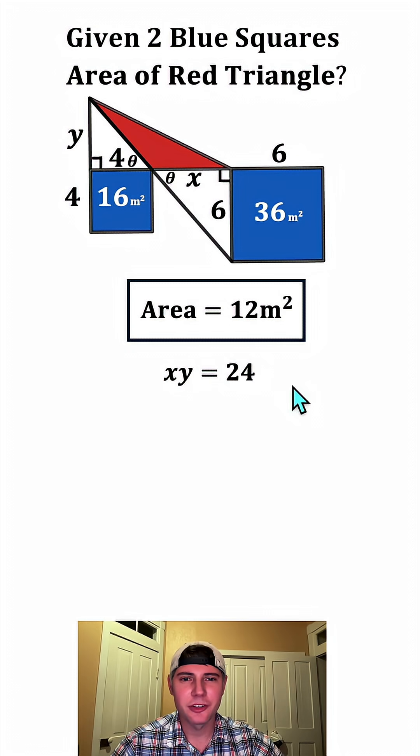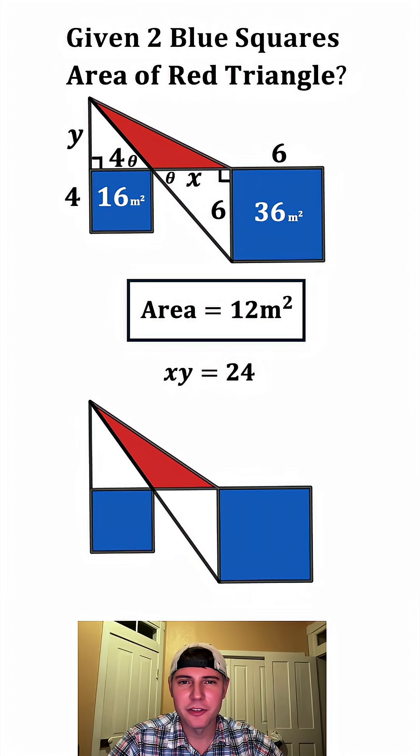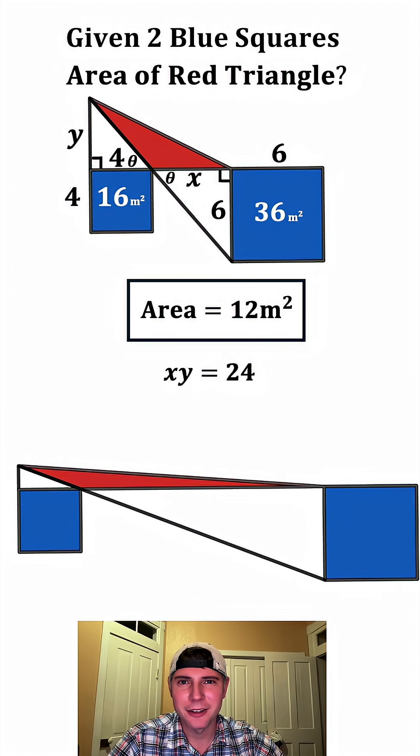And let's give it a label of meters squared. This is the answer to our question. The area of the red triangle is 12 meters squared. And that'll be true for all of these red triangles. They all have an area of 12 meters squared. How exciting.